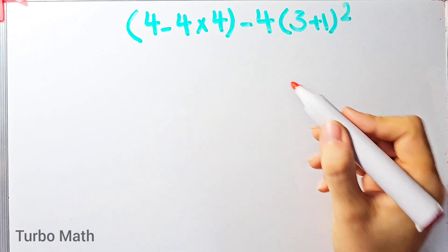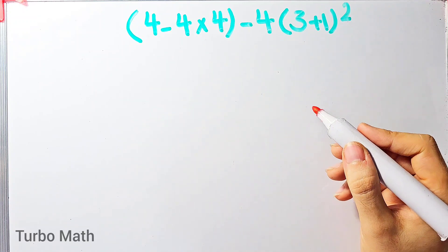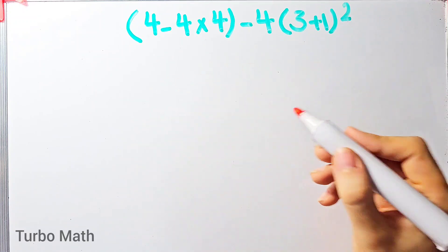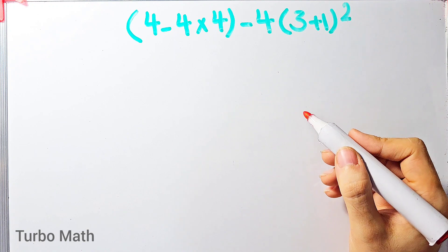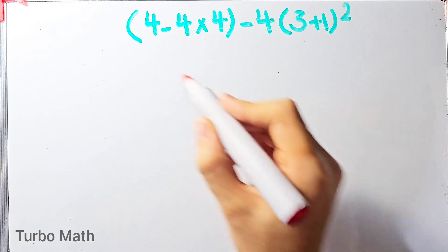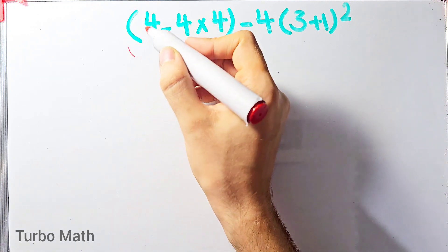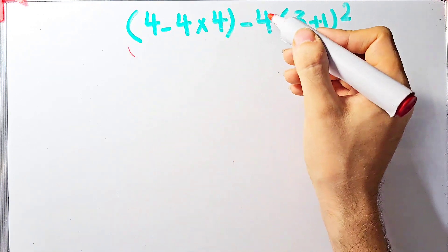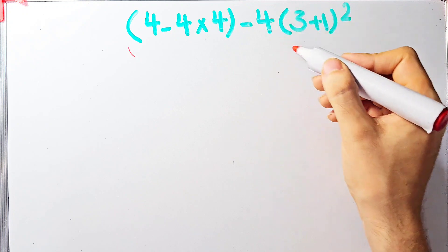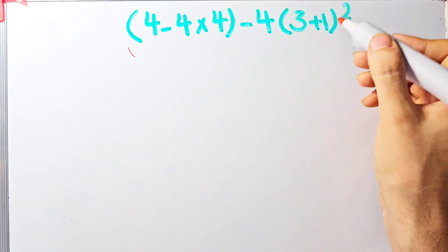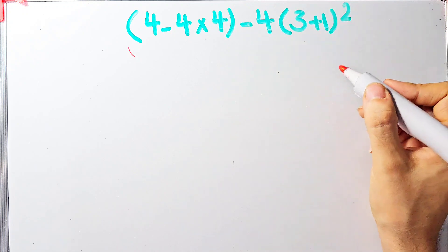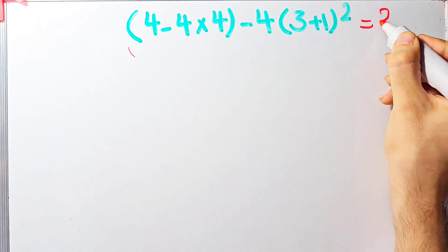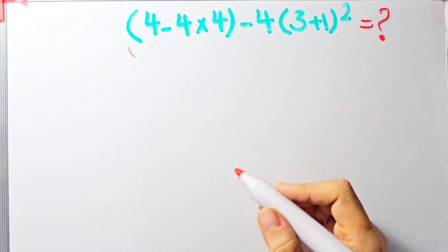Hi friends, welcome to Turbo Math channel. Many people when they see this question don't know which operation to do first, so they often make a mistake. The expression is: open parenthesis four minus four times four close parenthesis, minus four, times open parenthesis three plus one close parenthesis, to the power of two. What is the answer? Can you solve it?